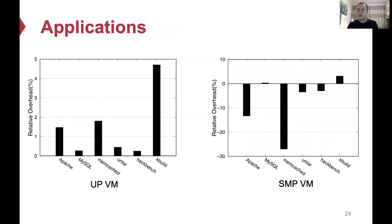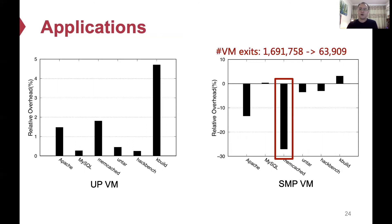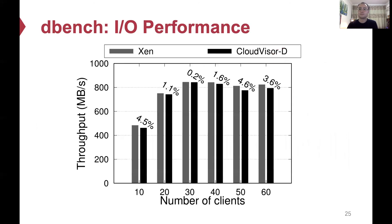We also evaluated the performance of CloudVisor-D with real-world benchmarks on uniprocessor and multiprocessor virtual machines. The left figure shows the performance overhead of a uniprocessor VM in CloudVisor-D compared with vanilla Xen — the maximum overhead is smaller than 5%. The right figure shows the performance overhead of an SMP VM. We observe that CloudVisor-D even outperforms vanilla Xen in some cases, because CloudVisor-D greatly decreases the number of VM exits. For example, for the memcached workload, the number of VM exits drops from 1.6 million to 53,000. For I/O performance evaluated using DBench, a widely used I/O-intensive benchmark, the overhead for storage I/O is smaller than 5% for all cases on SMP virtual machines.